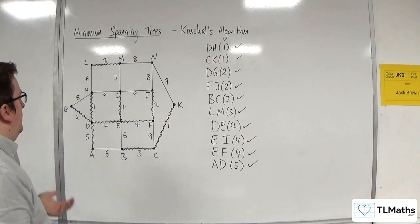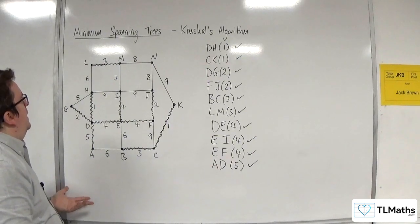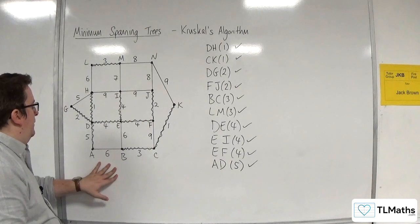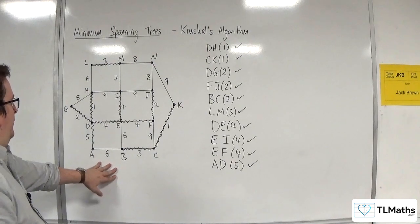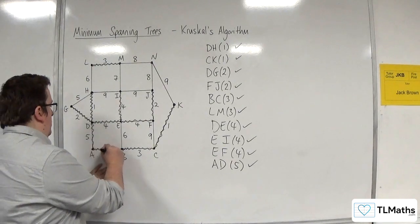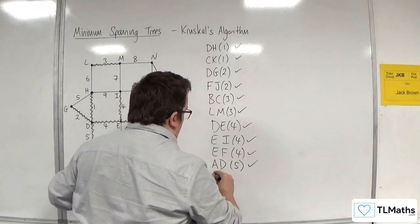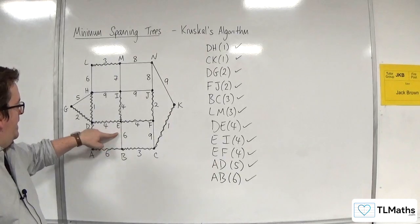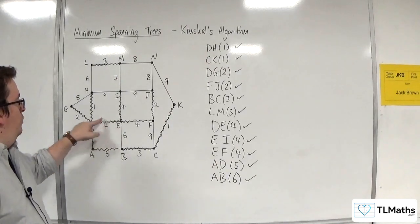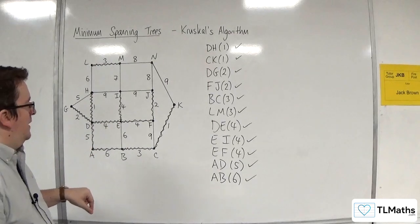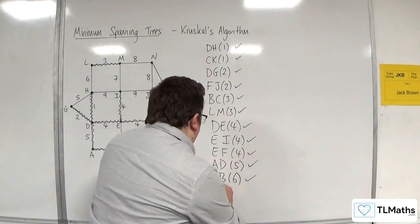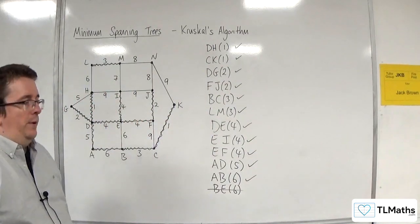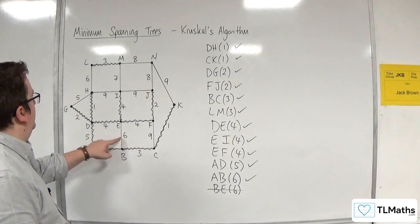I don't think there are any more 5s. So we're going to go on to 6s now. AB with 6. Now, will that cause a cycle? No. That won't. So AB with 6. That's all good. Now I have this one here, BE with 6. That would cause a cycle. So I'm going to write it down, but I'm going to make sure I draw a line through it and go, right, I'm not having that one. So that one's been excluded.